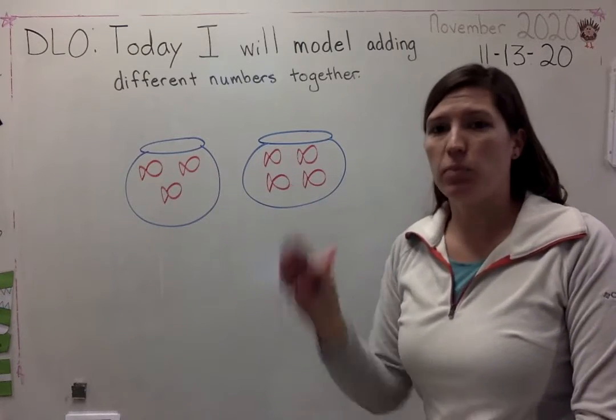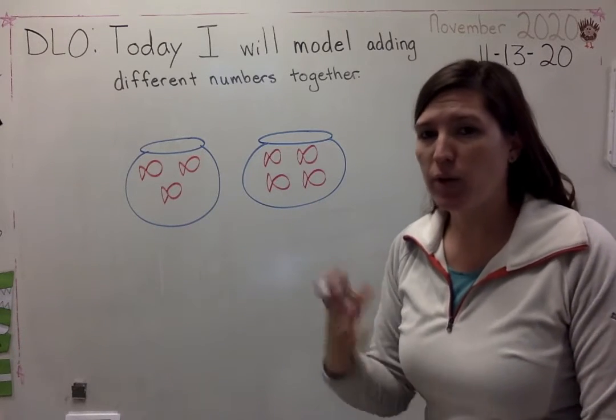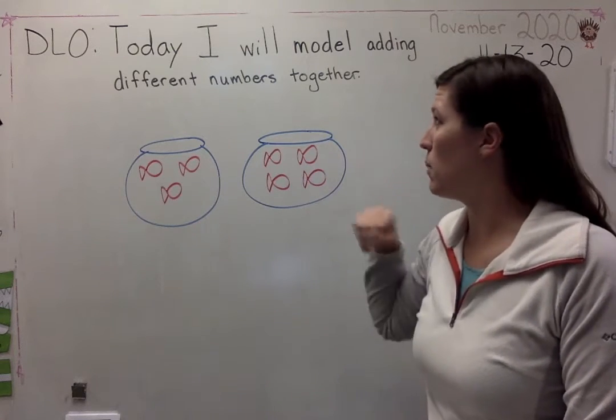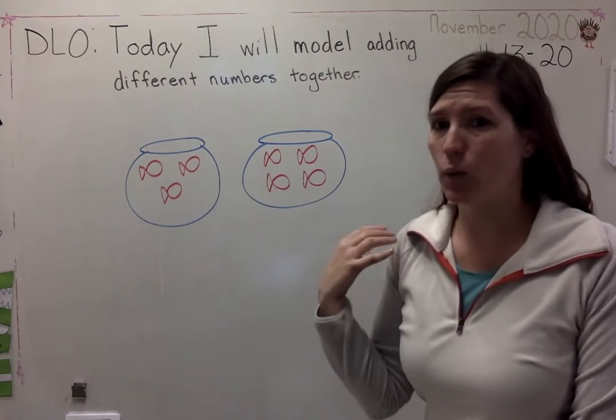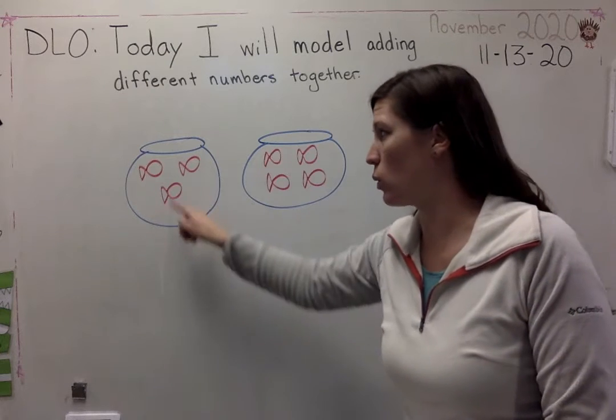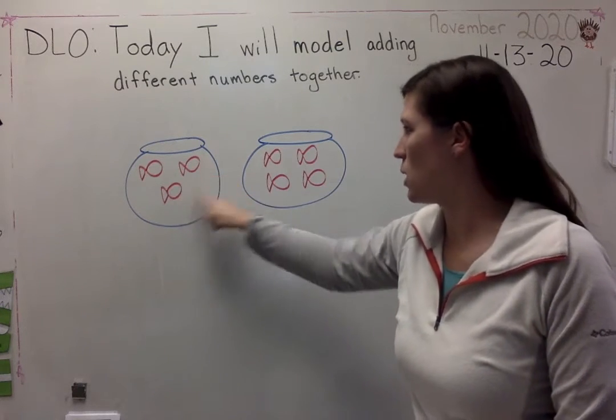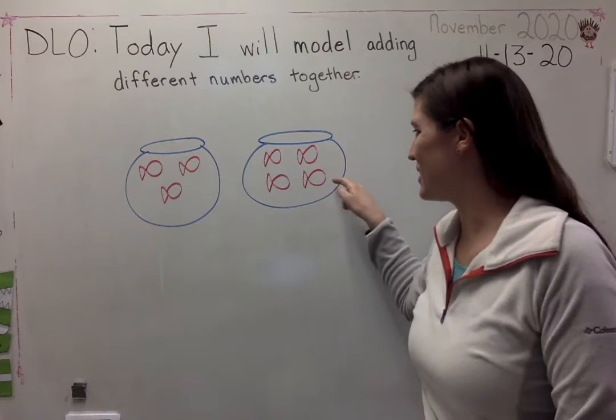So I modeled it by drawing pictures. How many fish do I have all together now? I could count them. That's a way that I can model it. I already drew them. Now I'm going to count them to show the total or to talk about the total. One, two, three, four, five, six, seven.